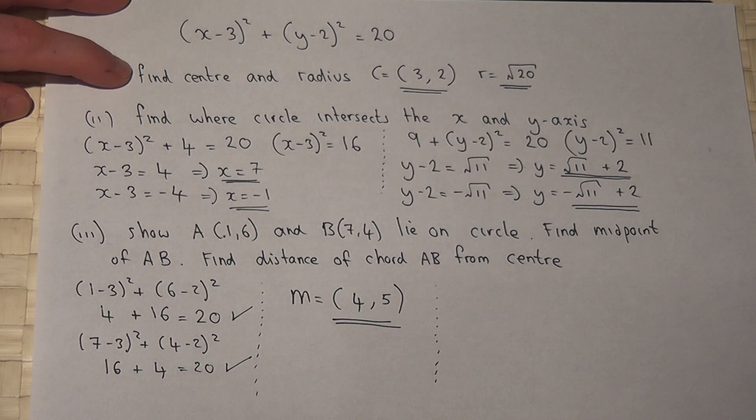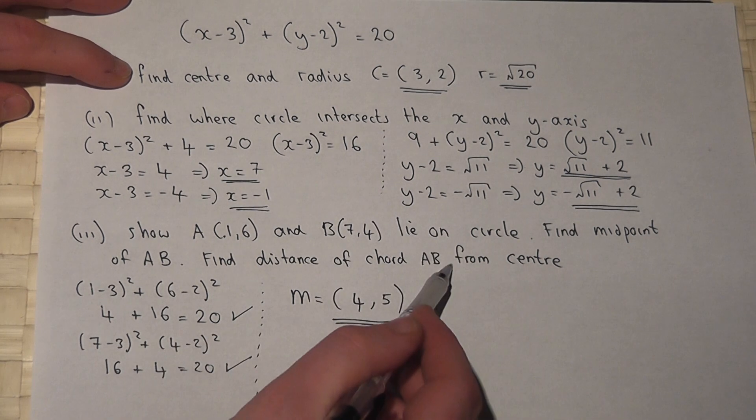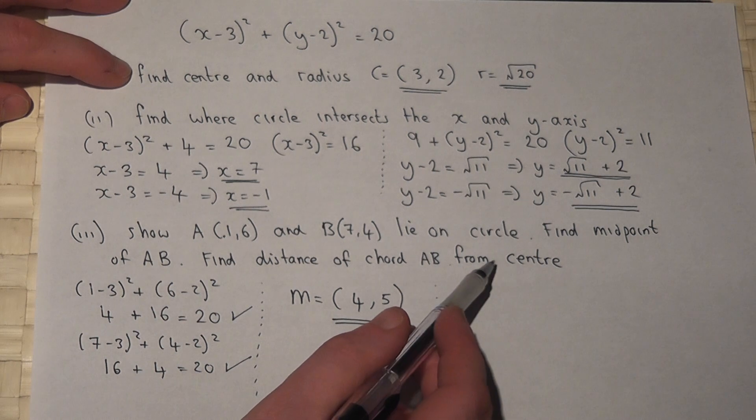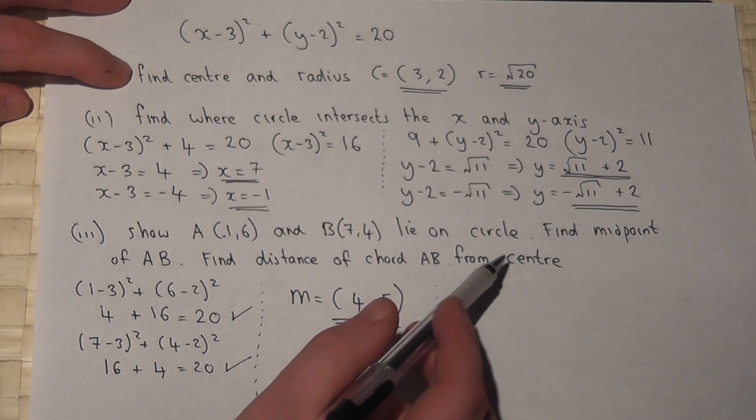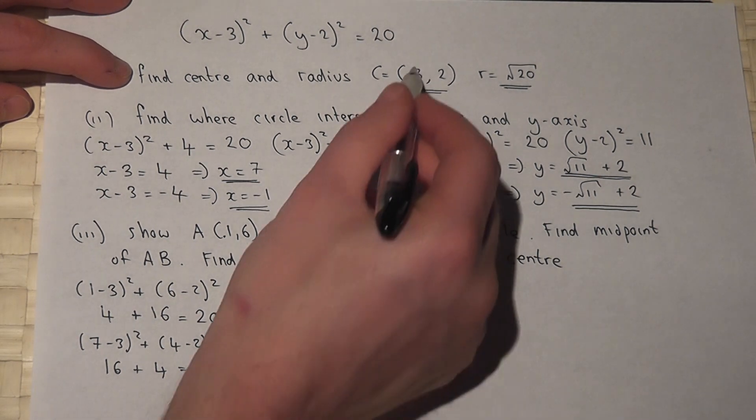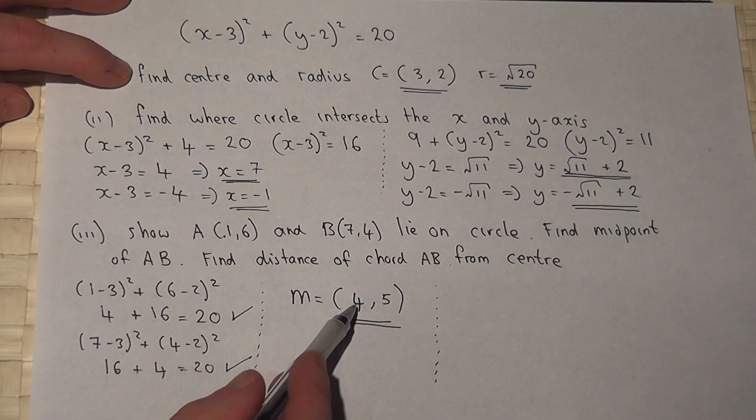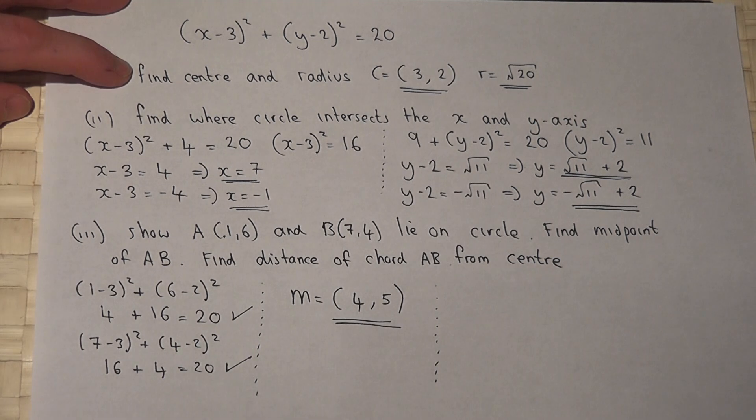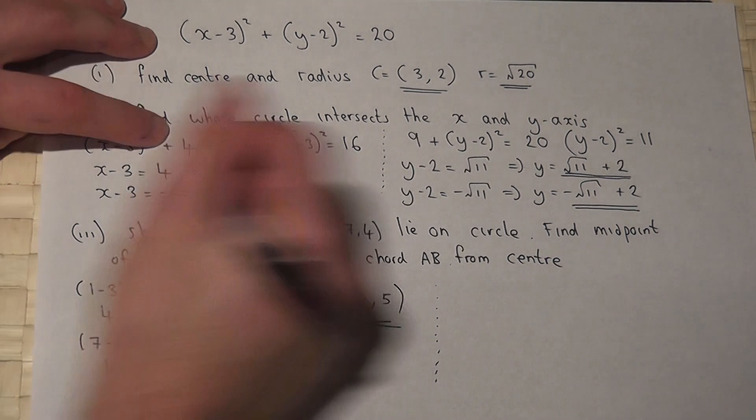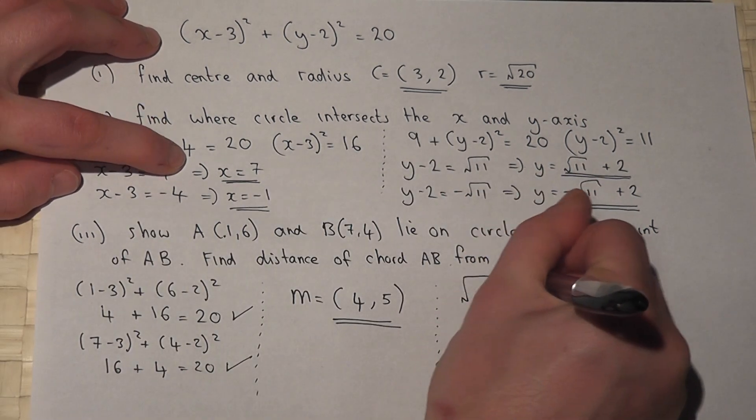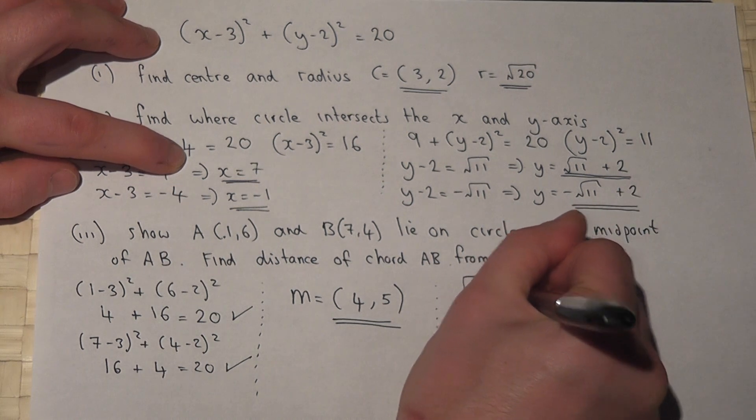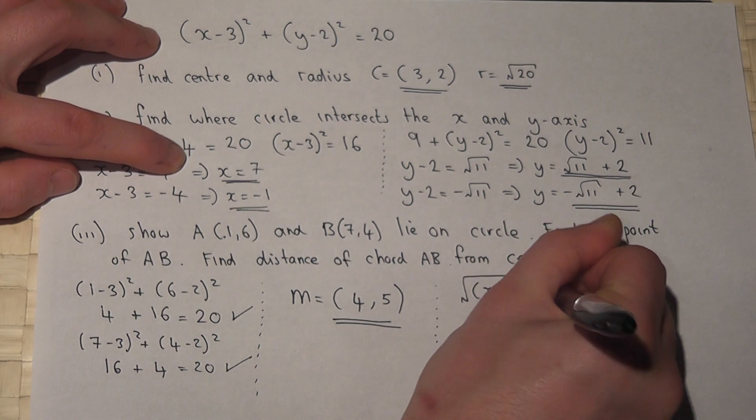Now, we're then asked to find the distance of the chord AB from the center. This is just the distance from the midpoint to the center. So I must find the distance between this coordinate and that coordinate. We know that the general equation for a distance is given by the square root of (x₂-x₁)² + (y₂-y₁)².